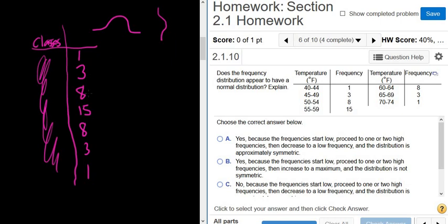So here it's 1, 3, 8, 15, 8, 3, 1. It's perfect. The pattern is 1, 3, 8 then 15, then 8, 3, 1 backwards. It's perfectly symmetric. It's totally bell-shaped. So the answer is yes. This is very, very normal.